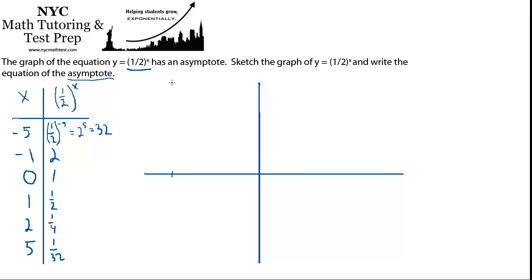So that's negative 5, 32. Then we have negative 1, 2. So maybe that's here. Let's suppose this is 2.